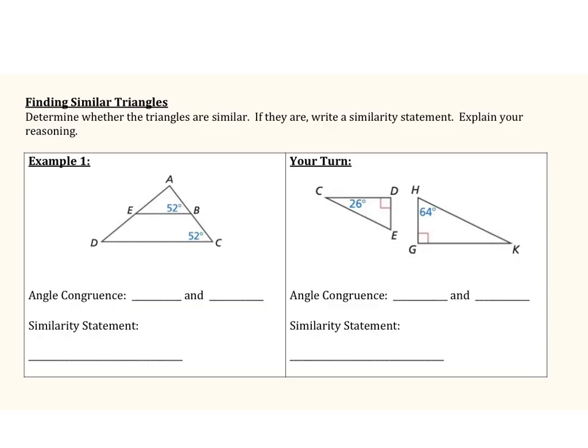For our examples here, we're going to determine whether the triangles are similar, then write a similarity statement and explain how we know. We have two different triangles: a smaller triangle ABE and a larger triangle ACD. These triangles overlap a little bit, so to identify congruent angles, I'm going to redraw them as two separate triangles — triangle AEB on the left and triangle ADC on the right.